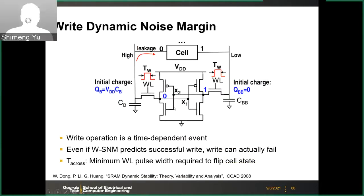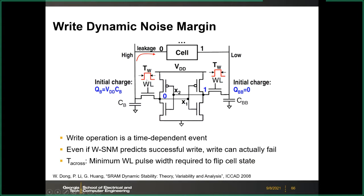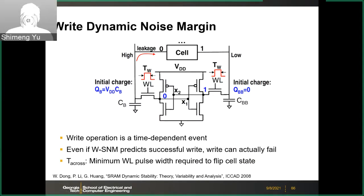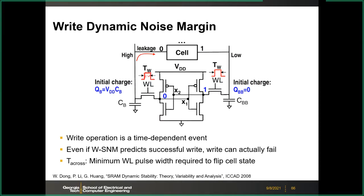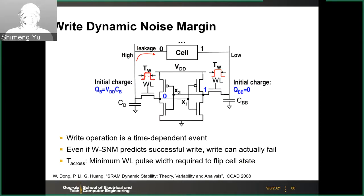We can now define the write dynamic noise margin. In the real operation of the SRAM, the write operation is in pulse mode — you apply the word-line voltage for a certain duration T_w. This T_w must be long enough to flip the state.